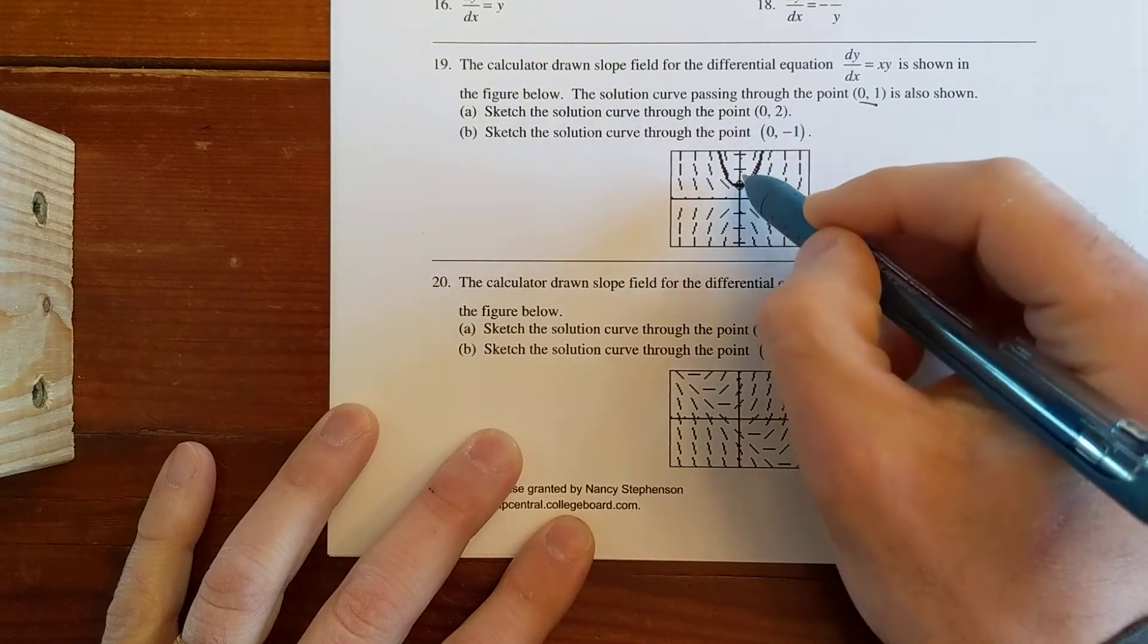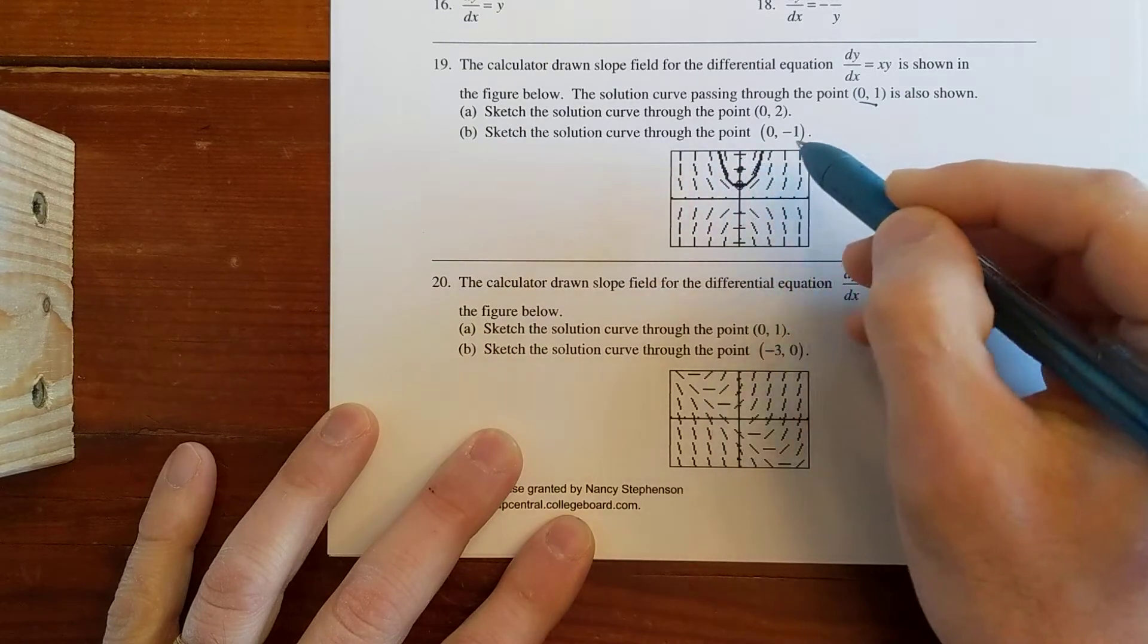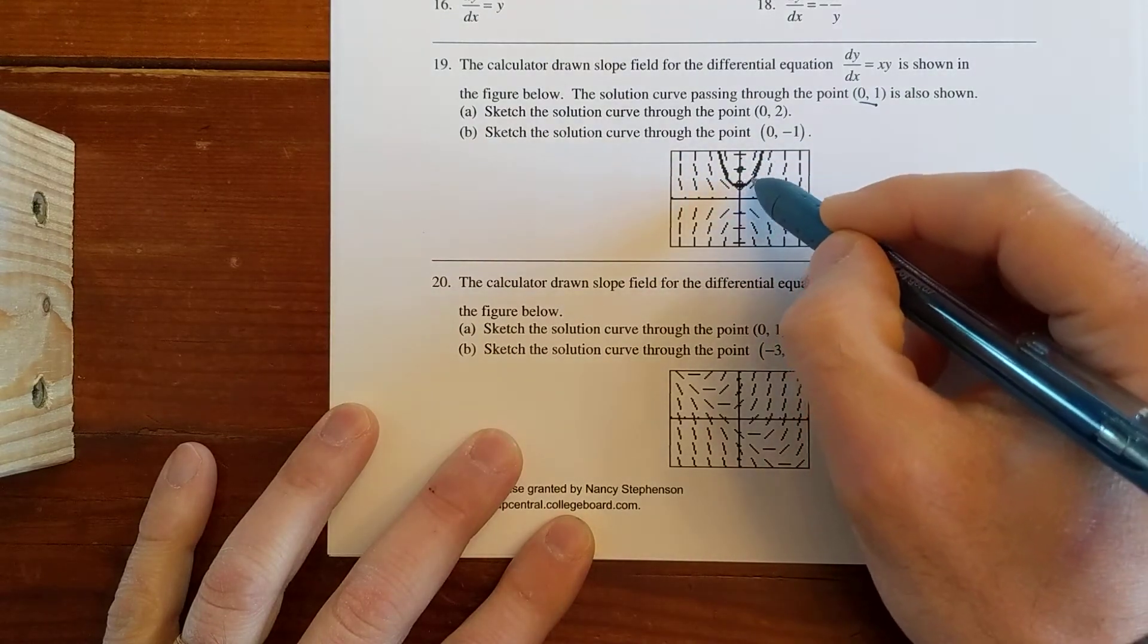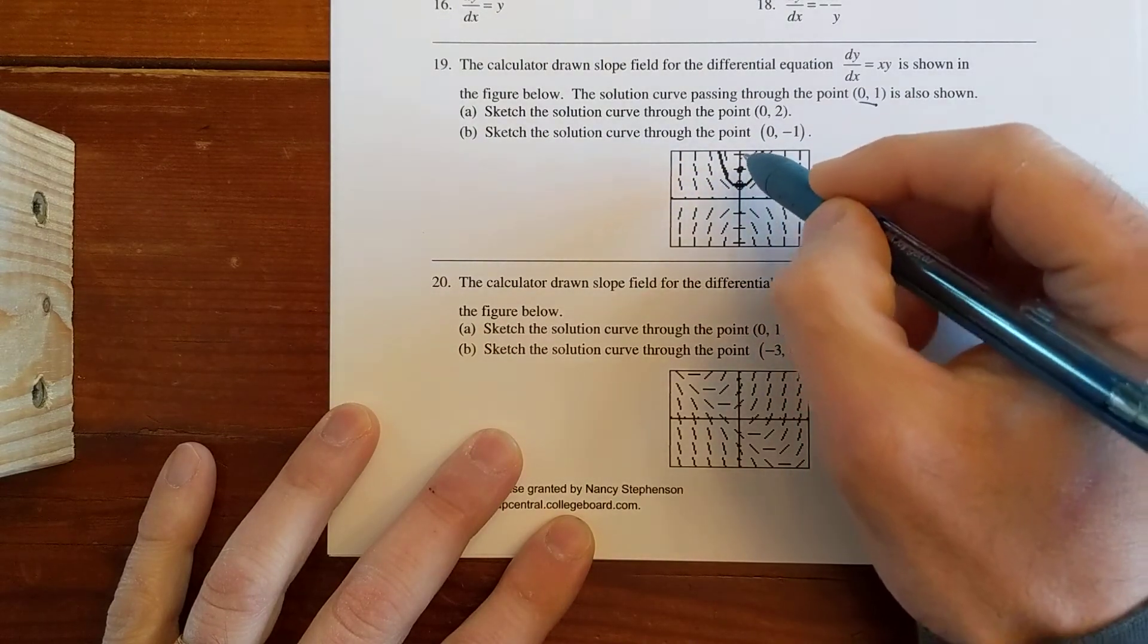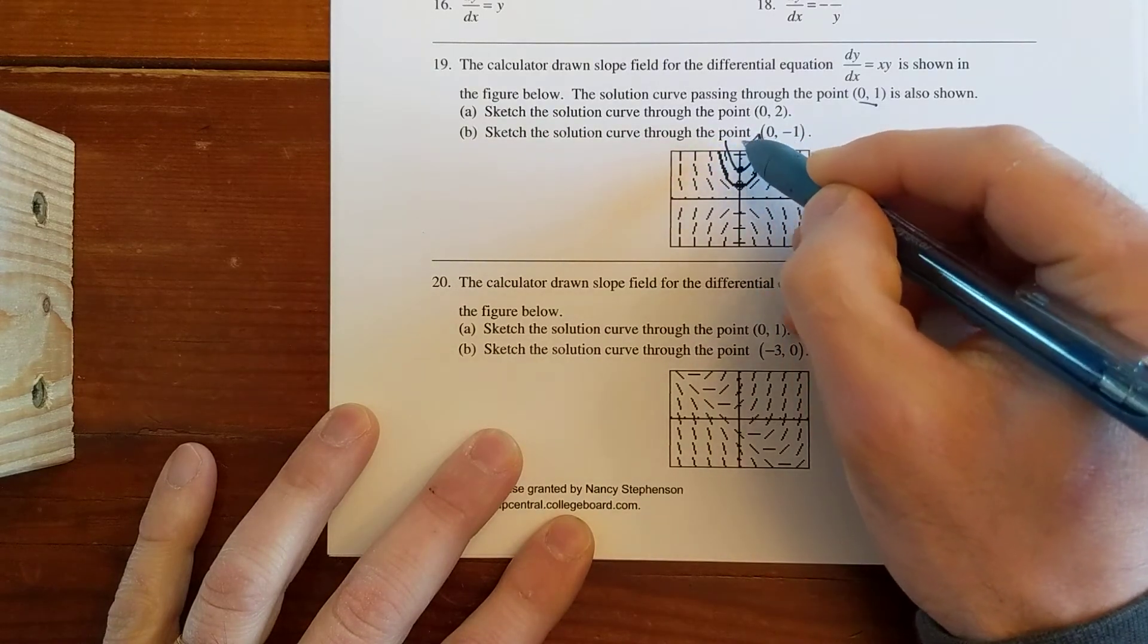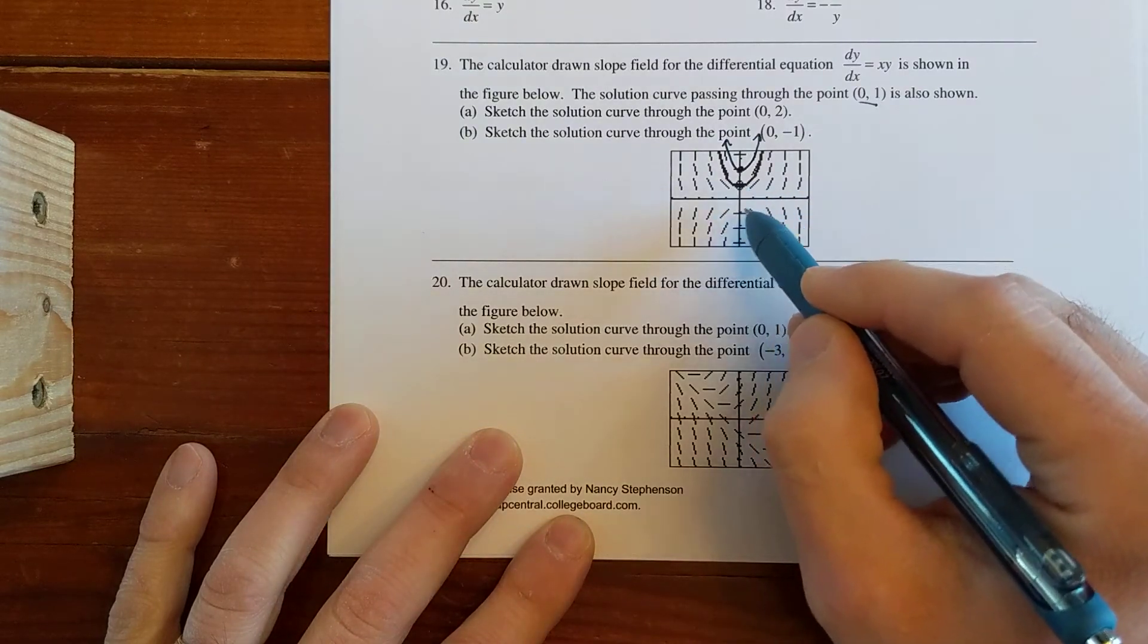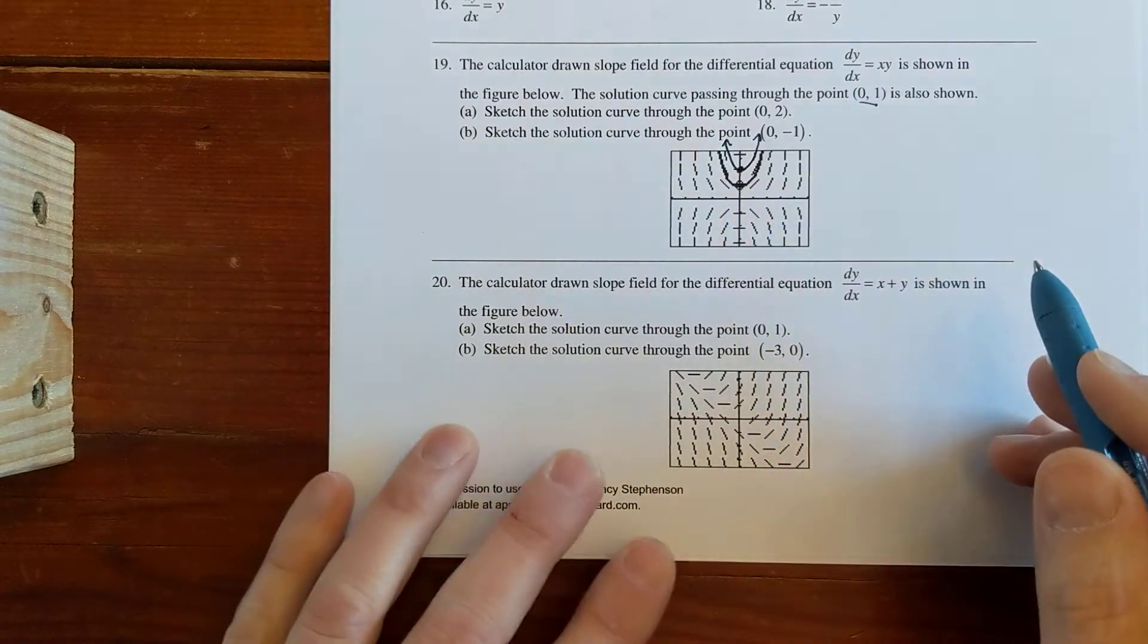So we'd start the first one at the point (0,2), which is right up here, and then just following the slope field right here. Since we've already been drawn or given a parabola right here, I think this same thing is going to happen in this spot, that we're going to end up with a solution curve that looks something like that. I'm just trying to follow the general pattern of what's going on in the slope field.